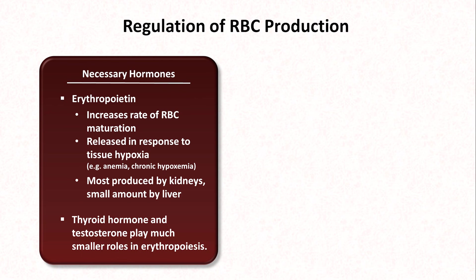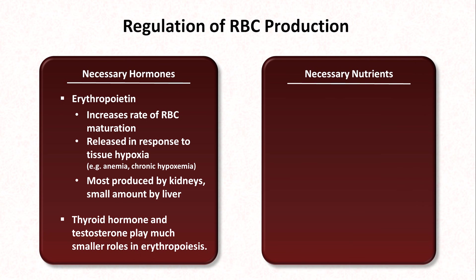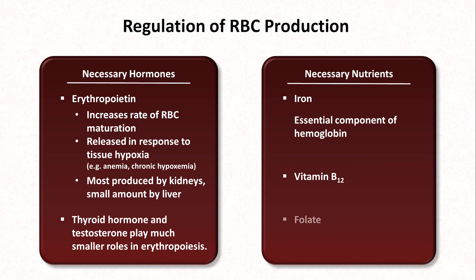In addition to the hormones necessary for RBC production, there are also necessary nutrients. A complete list of nutrients is long, but there are three of primary clinical relevance. First is iron, which is an essential component of hemoglobin, and the other two are vitamin B12 and folate, which are both necessary for DNA synthesis. Lack of any of these three will necessarily lead to decreased RBC production and anemia.